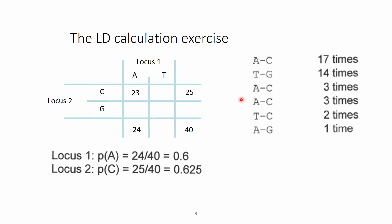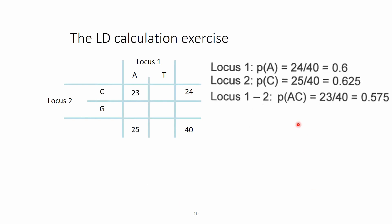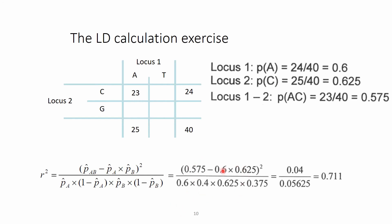And because we are actually interested in proportions rather than the numbers themselves, for locus 1 the proportion of A is 24 divided by 40, that is 0.6. And for locus 2, the proportion of C is 25 divided by 40, that is 0.625. And the joint occurrence the same way, so 23 divided by 40, and that is 0.575. So with this we already have everything: the proportion of A, proportion of C, and the joint occurrence. So we put them in into the equation itself, and then we end up with an LD between locus 1 and locus 2 as 0.711. So this is the LD between these two loci.